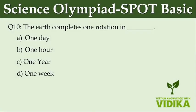The Earth completes one rotation in dash. Option A: one day. Option B: one hour. Option C: one year. Option D: one week.